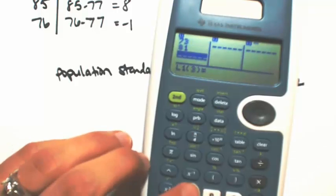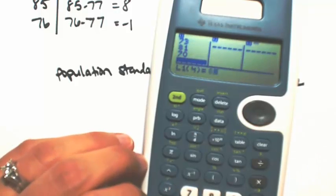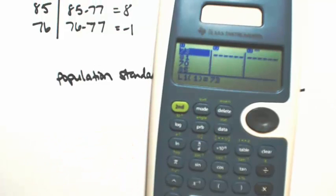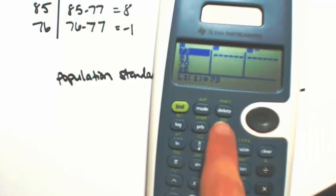You're going to type everything in. So you've got 73, 81, 70, 85, and 76. So once you put in all the data, now you're going to calculate it. So we're going to go into second data and hit STAD.